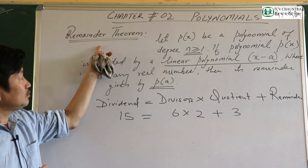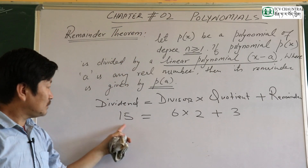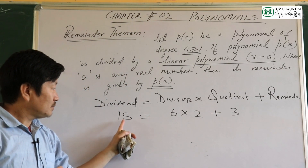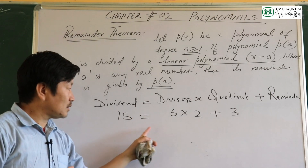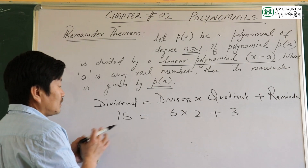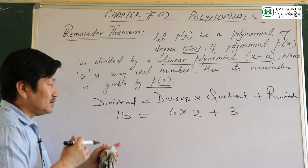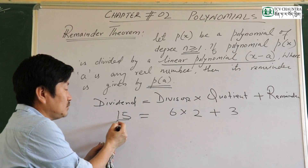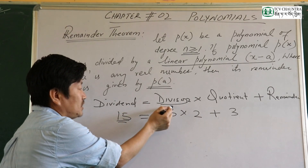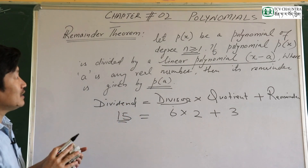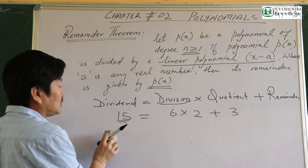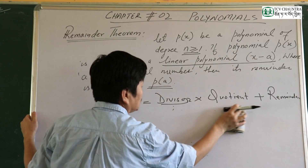If you look at the remainder theorem for polynomials, real numbers are all polynomials. If you have a dividend and a divisor, polynomials and polynomials are all divided using the same division algorithm structure.